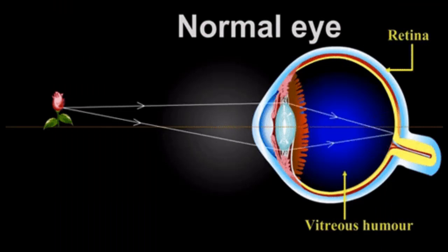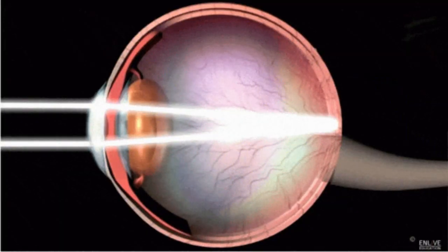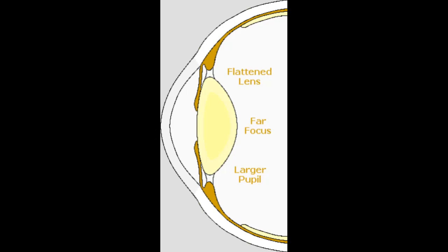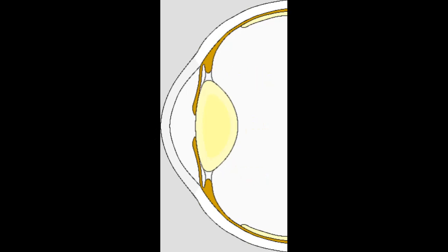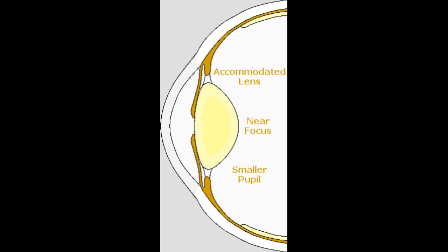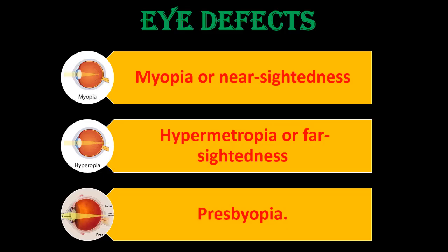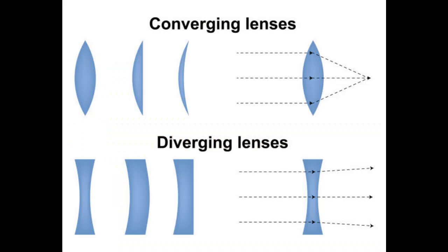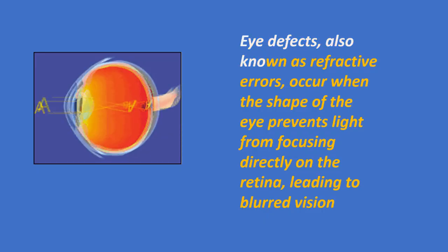Understanding the eye's workings highlights the crucial role each component plays in enabling human vision. Eye defects: As you may have noticed, human eyes gradually lose their power of accommodation. There are three common eye defects: myopia or nearsightedness, hypermetropia or farsightedness, and presbyopia. These defects can be corrected using suitable spherical lenses, though we will also discuss other eye defects.